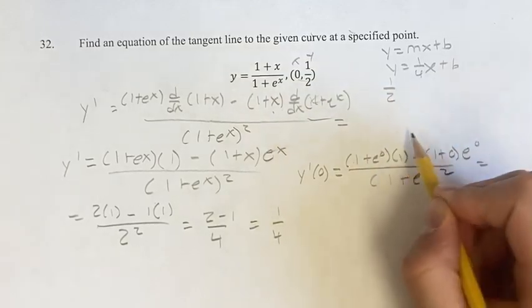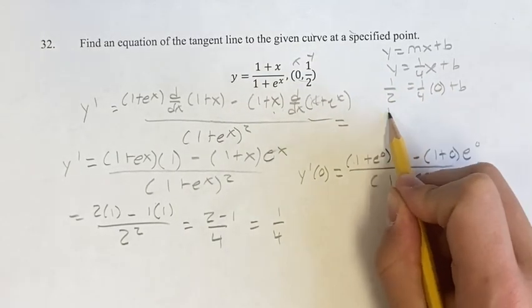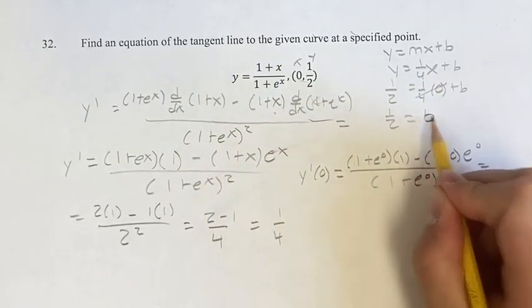So if you plug in the point, y is 1/2, x is 0. You get 1/2 equals b, since the x term cancels out.